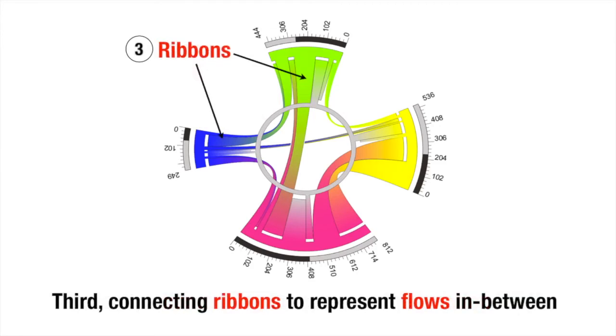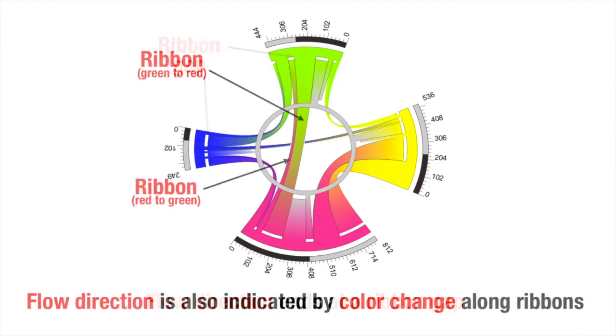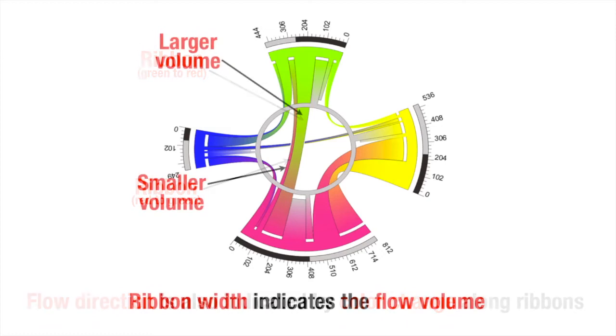Third, connecting ribbons to represent flows in between. The flow direction ends at a ribbon gap. Flow direction is also indicated by color change along ribbons. The ribbon width indicates the flow volume.